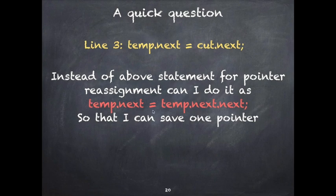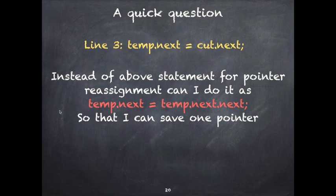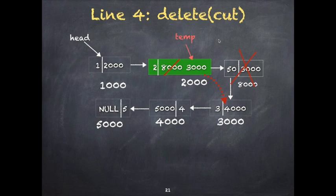A quick question: instead of temp.next = cut.next, could we write temp.next = temp.next.next, provided temp.next and temp.next.next are both not null? Think about that and note it down. Continuing with line four: the link from 8000 is now reassigned to 3000, so the node pointed to by 'cut' is deleted.